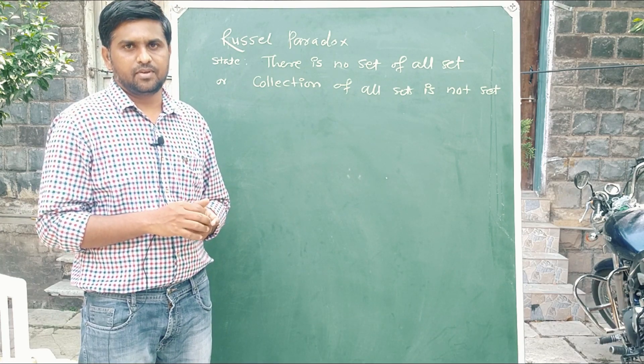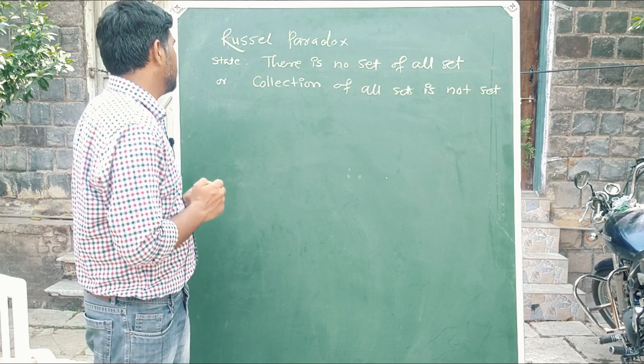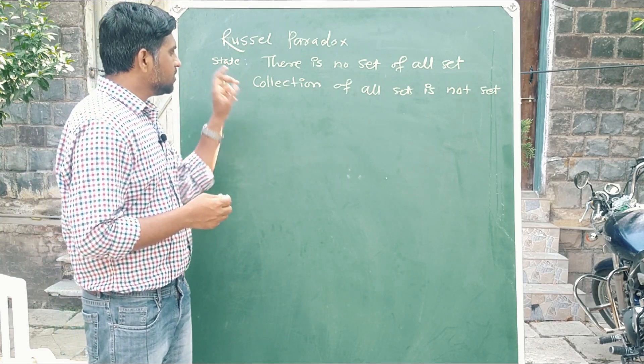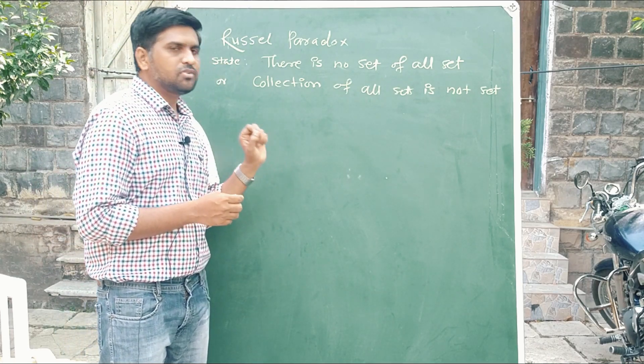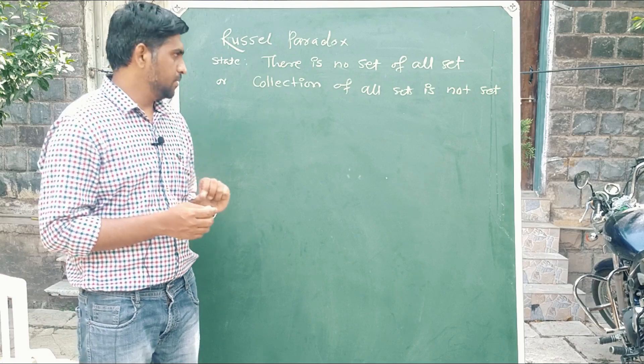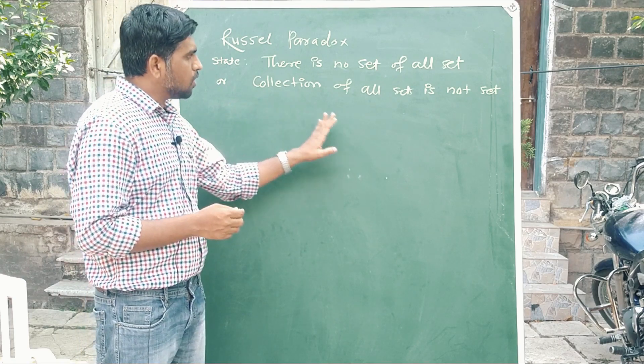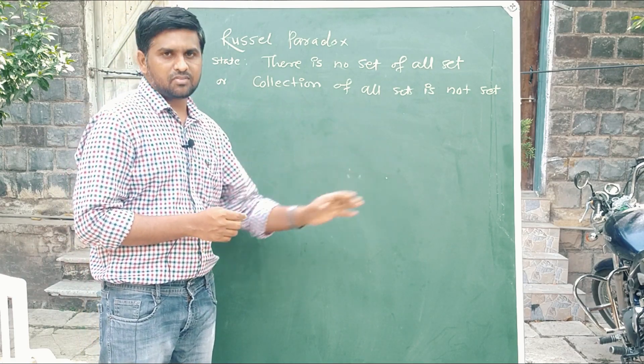One of the famous ones is Russell's Paradox. The statement is: there is no set of all sets, or the collection of all sets is not a set.